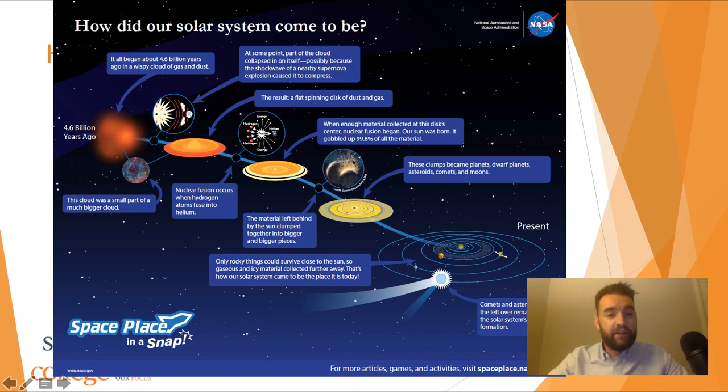The material left behind by the sun clumped together into bigger and bigger pieces through accretion and started to form planets. These clumps became planets, dwarf planets, asteroids, comets, and moons. Only rocky things could survive close to the sun. The gassy and icy materials collected further away. That's how our solar system became the place it is today.